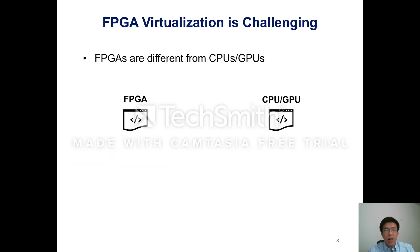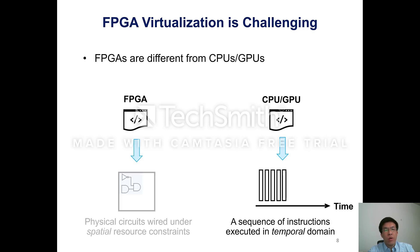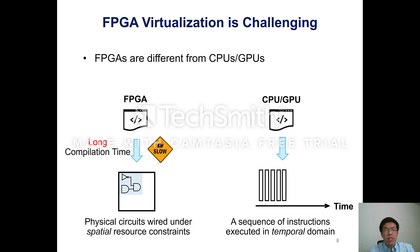This is a challenging task since FPGAs are radically different from traditional computing devices. CPU applications describe the sequence of instructions executed in the temporal domain. On the contrary, FPGA applications describe physical circuits that are directly mapped onto the spatial architecture. Moreover, FPGAs have a long compilation time since they need to place numerous components onto the spatial architecture and route numerous interconnection nets, so performing FPGA compilation at runtime could lead to high overhead.